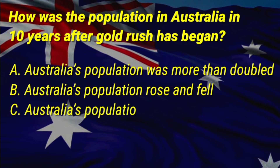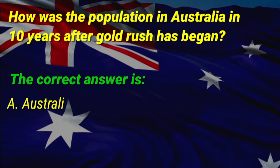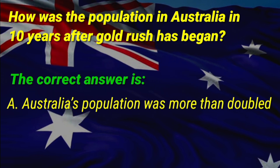A: Australia's population was more than doubled, B: Australia's population rose and fell, C: Australia's population decreased. The correct answer is A, Australia's population was more than doubled.